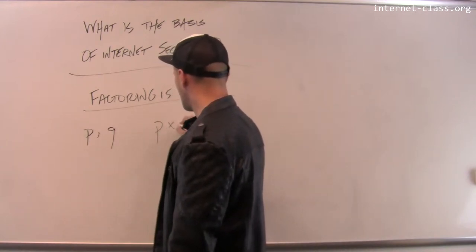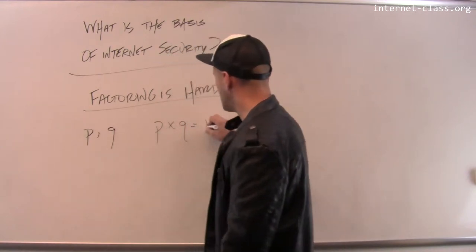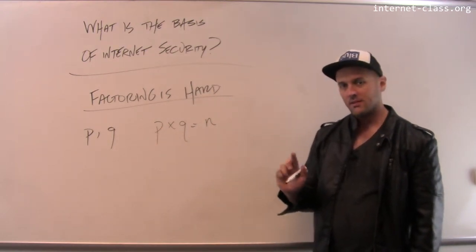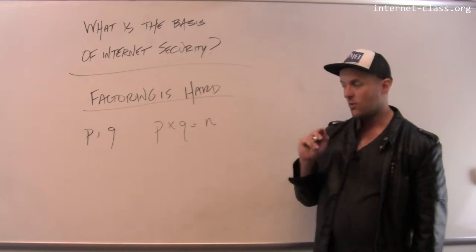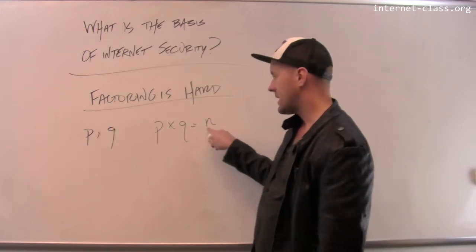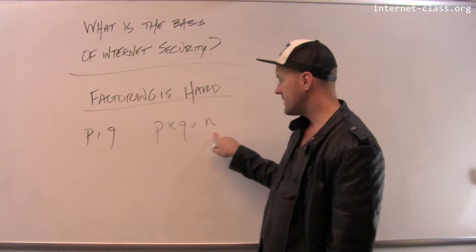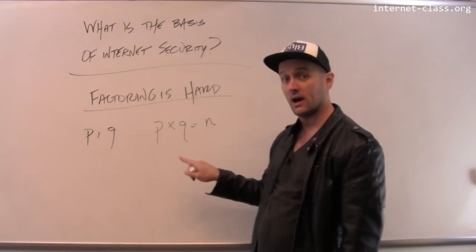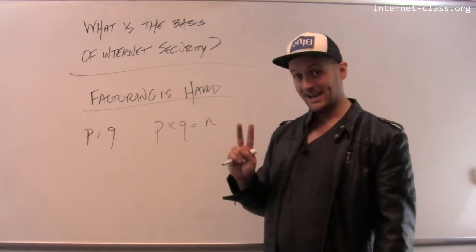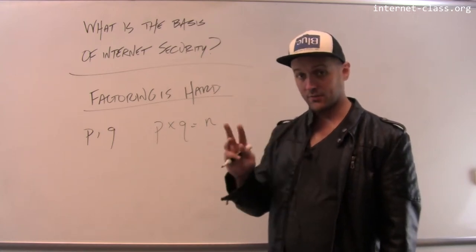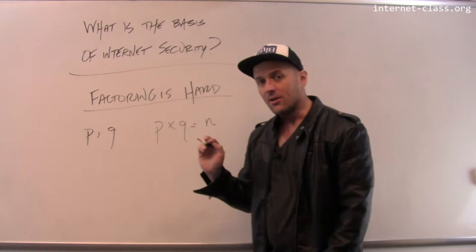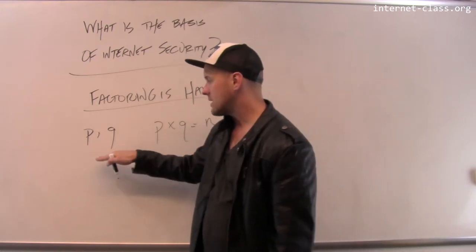I can take p times q and get a new number called n. Remember, p and q are prime, so they can only be divided by themselves and one. So it turns out that n has limited factors: n can be divided by p, n can be divided by q, and n can be divided by one. So n is not prime - n has four factors: itself, one, p, and q.